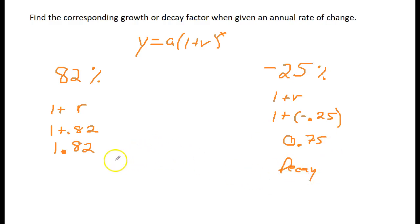0.75 is our decay factor. And for the other one, 1.82 is our growth factor. Now you know how to find those. Not too bad. Have a good one.